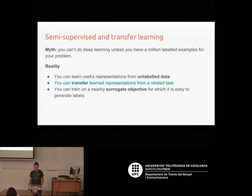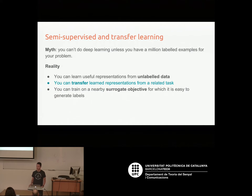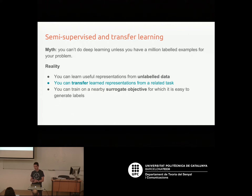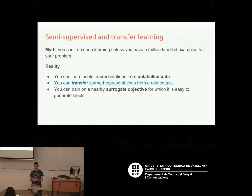The ways you can do that: you can learn useful representations using unlabeled data — this is called unsupervised learning or unsupervised pre-training, which I'll talk about in a later lecture. You can transfer things learned from other tasks to a related task — that's called transfer learning, which is what I'm going to talk about this time. And you can also do something like learning on a surrogate objective, something similar to what you want to learn but where it's easy to get labels or ground truth.